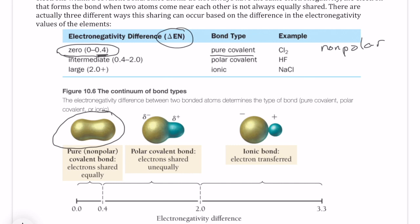However, if the electronegativity difference or the delta EN is higher than 0.4 all the way to 2, then that sharing is going to be unequal. So one element is going to have more electrons, the other element is going to have less of the electron that's being shared.